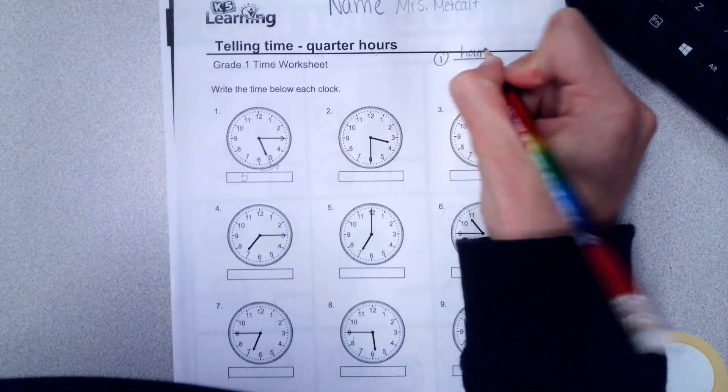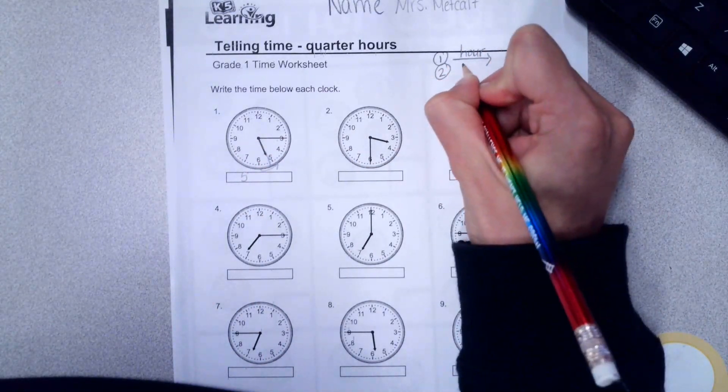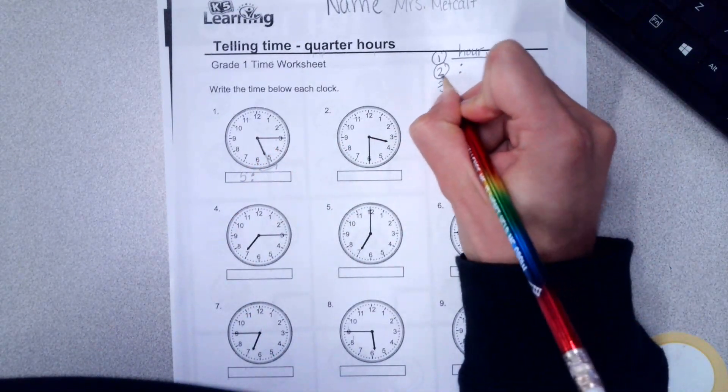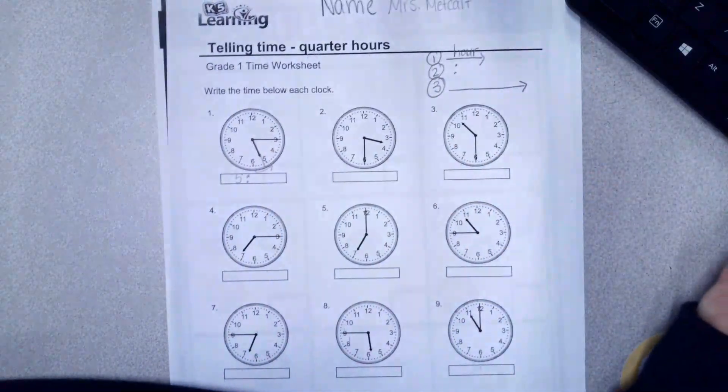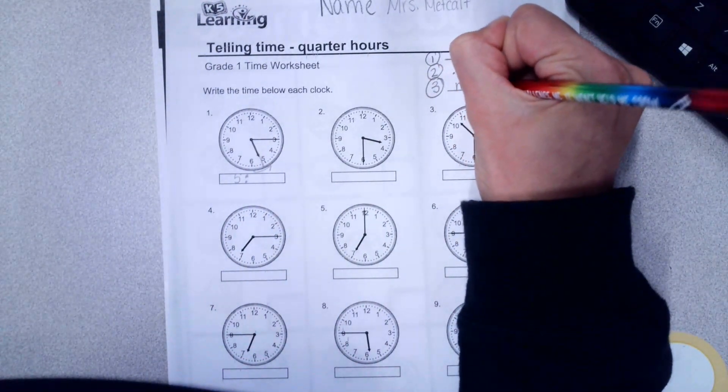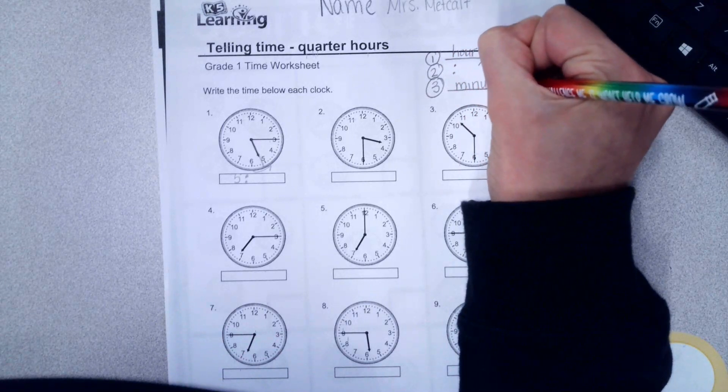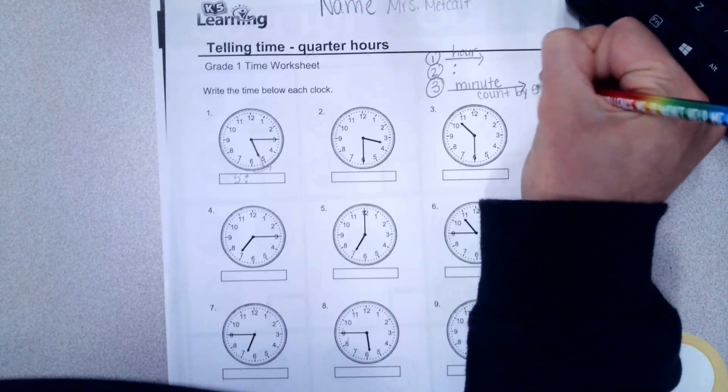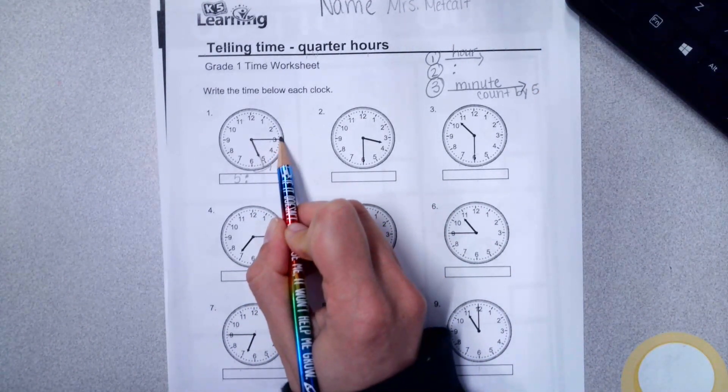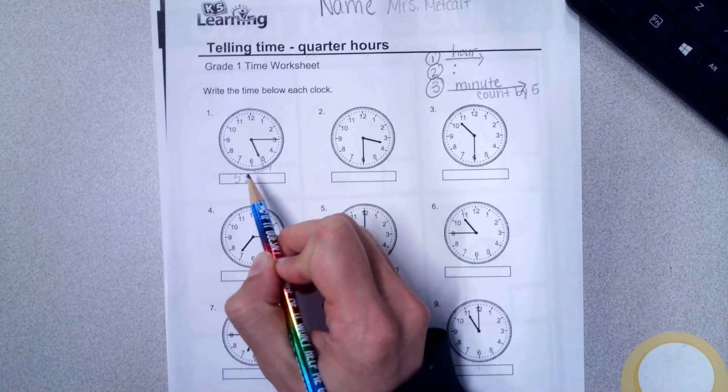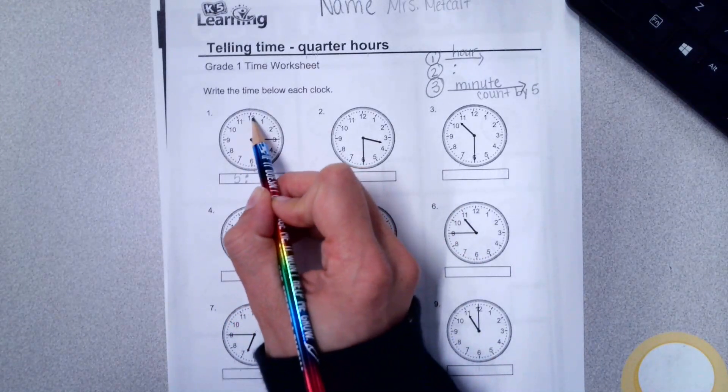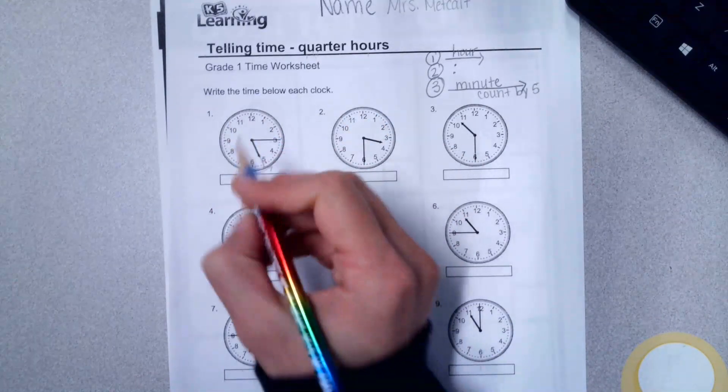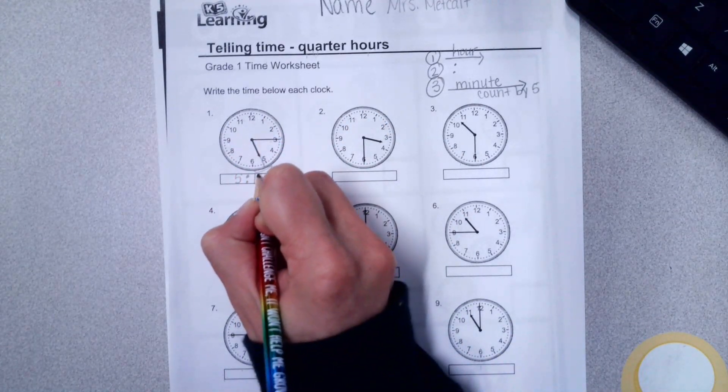That's the hour. And then we draw our colon, dot dot. Everybody does that. And then for the next step, we look at the minute hand. That's the long hand. So short hand goes first. And then we do the minute by counting by fives. You need to make sure you're counting by fives to see what the long hand is at. This is not five, three. That is not a time. Then we count by five, starting at this one, five, ten, fifteen. So this first one is five, fifteen.